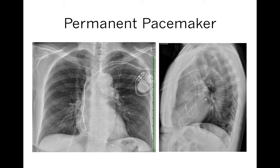Here's an example of a pacemaker on a chest X-ray. As you can see, the pacemaker is placed in the left upper chest with the leads going through the vein down the SVC, and this lead goes to the right ventricle and this lead goes to the left ventricle.